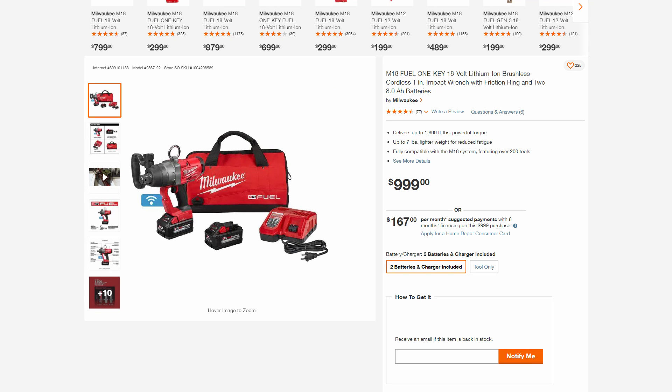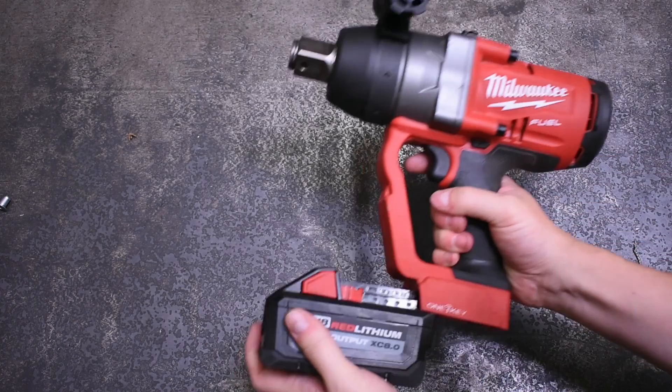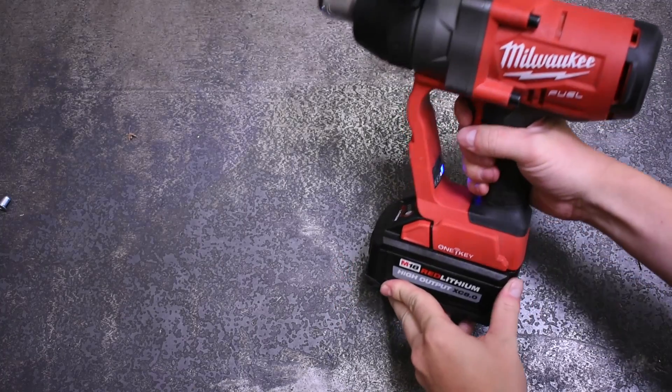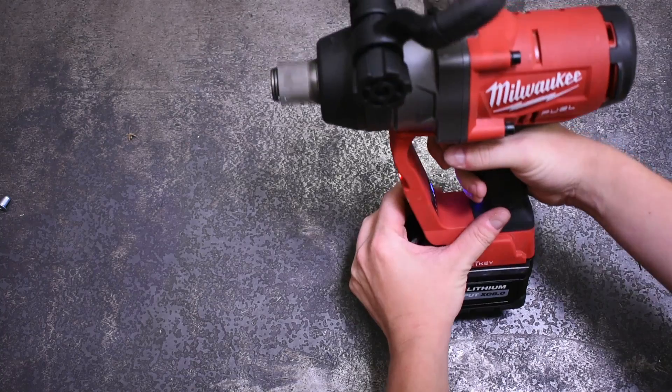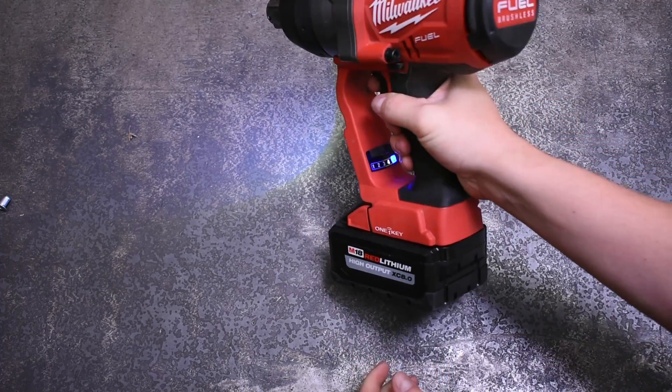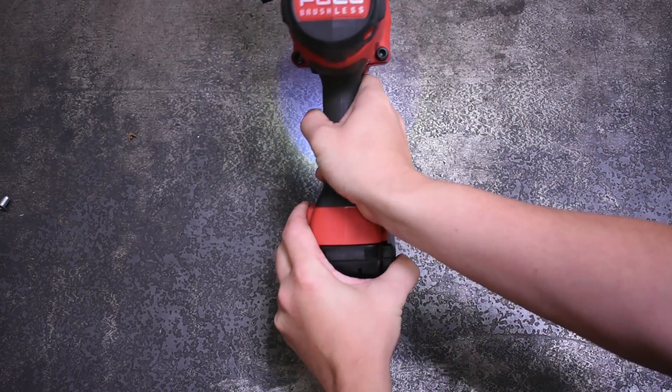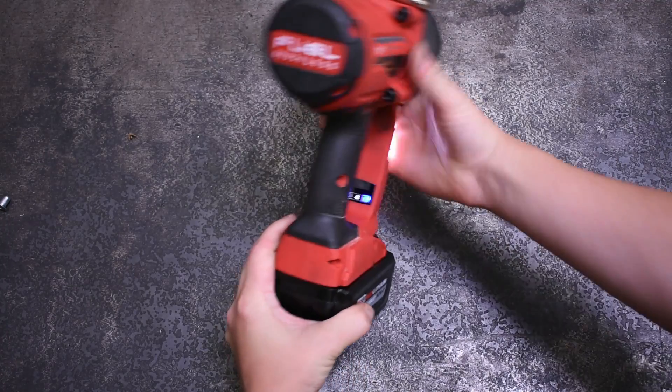Speaking of that kit though, as we tend to do on this channel, we will be testing the tool with the battery the brand advertises its torque figures with, which in this case with the 2867-22 is an XC 8.0 High Output.